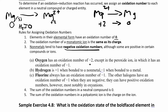Oxygen likes to be negative two, except if it's in a peroxide, then it's negative one. Or if it's in its elemental form, it's zero. Usually when you see oxygen, think negative two. Hydrogen likes to be plus one when it's with a non-metal, or negative one when it's with a metal.